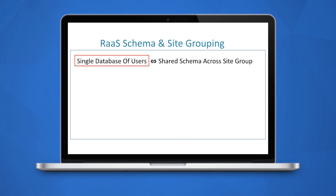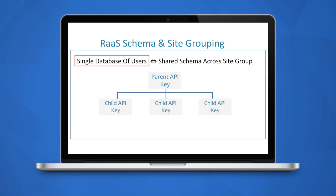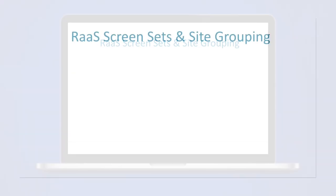As we mentioned earlier, the core concept behind Site Grouping is to provide the ability to store users across multiple sites within a single consolidated database. This means that when RAS is used in a Site Group, all API keys within the group will share the same database schema, as there is in fact only one database of users. An important concept to remember is that since the schema is shared across all API keys within the Site Group, setting a field to required on any API key will cause it to be required on all API keys in the Site Group. It is possible to make changes to your database schema by making an accounts.setSchema API call using the parent or any child API key in the Site Group, which will modify the database schema for the entire Site Group.